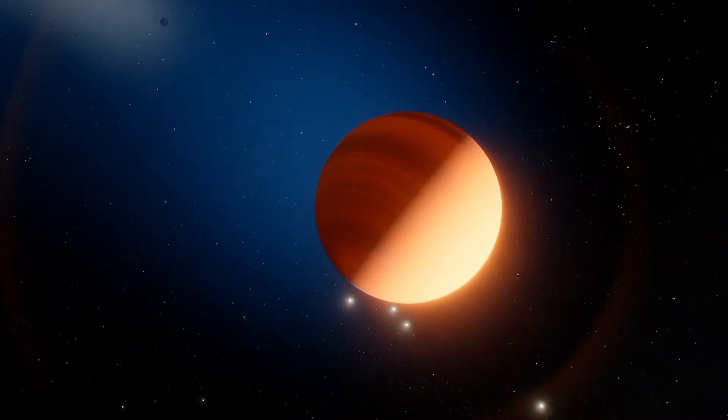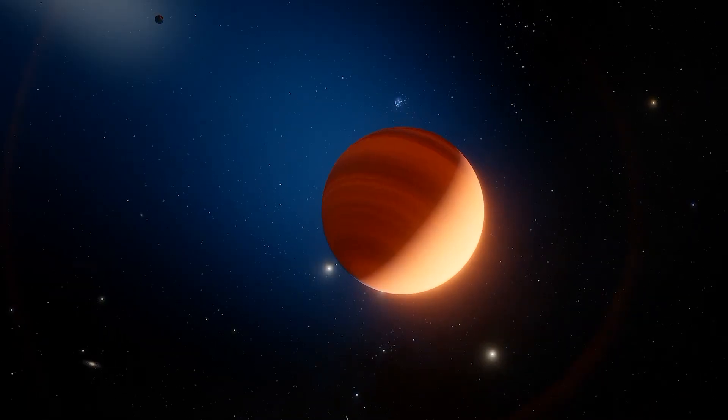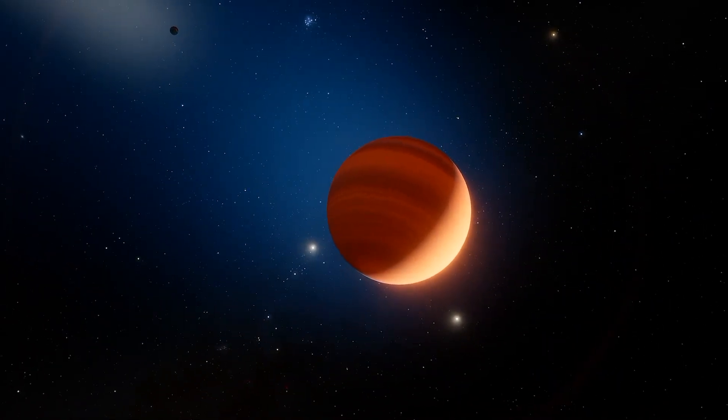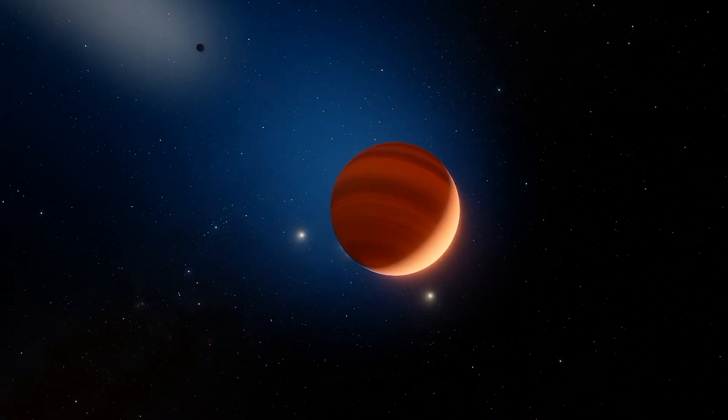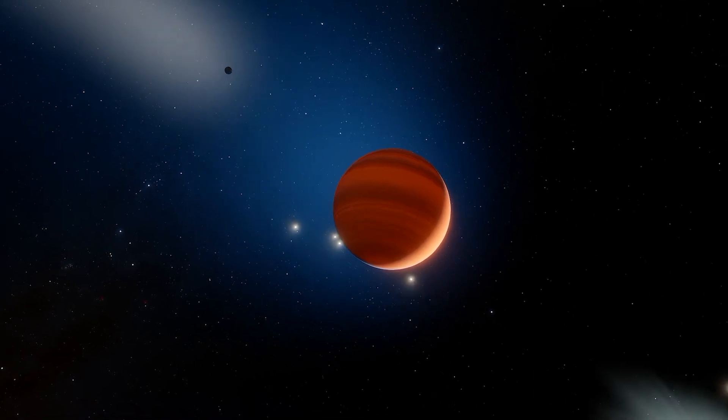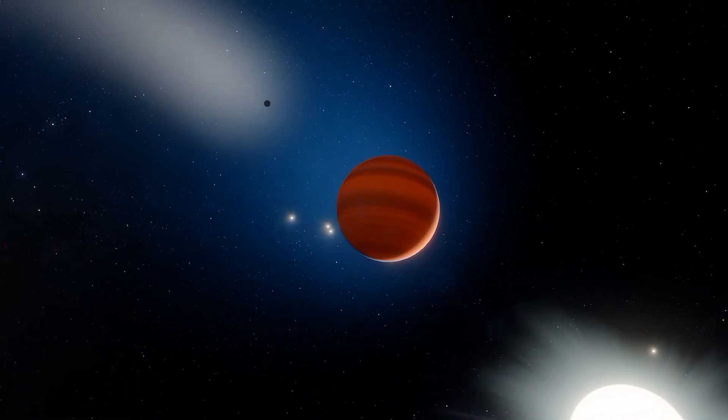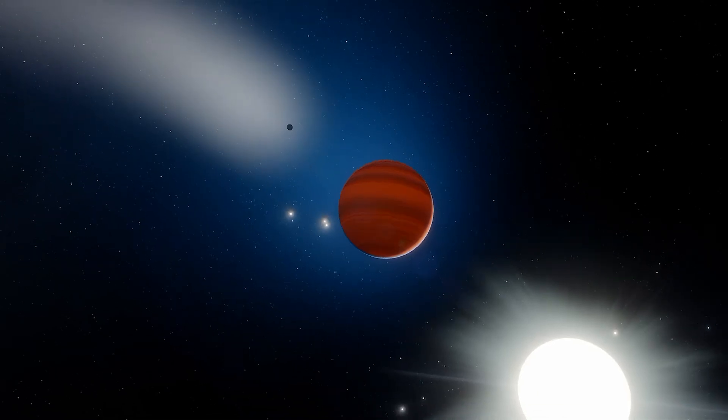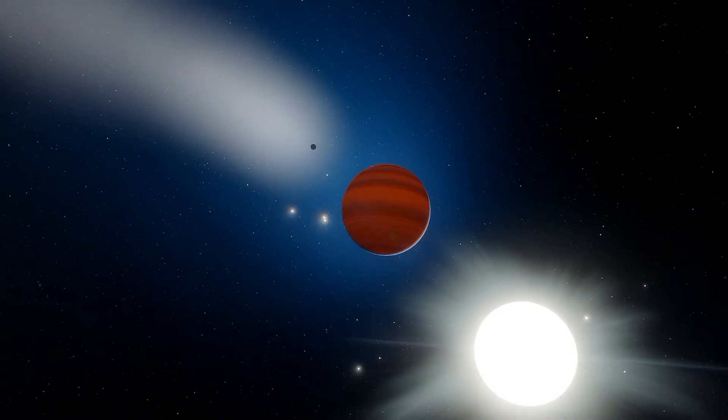Hot Jupiters are often close enough to their star to have become tidally locked, with one side of the planet perpetually facing the star. Some are thought to even reach temperatures in excess of 3000 degrees Kelvin. But how does a planet like that even form?